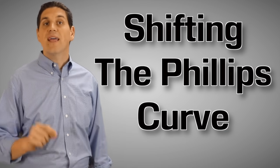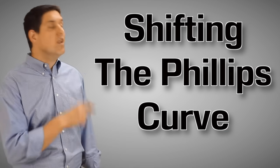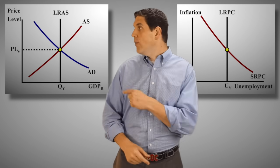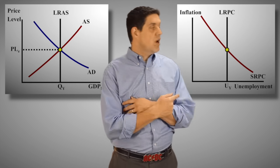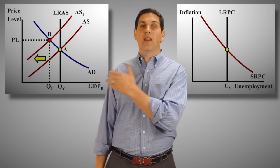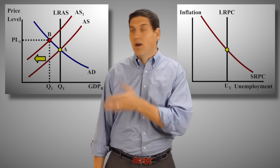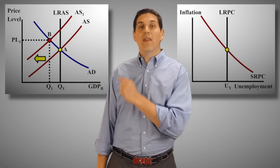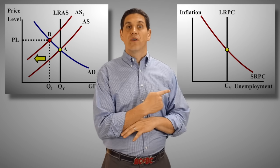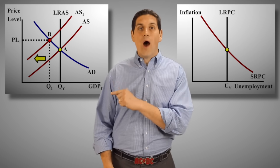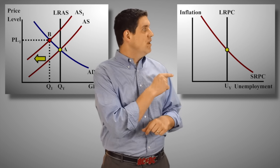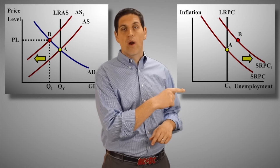Bonus round! Just like aggregate demand and supply, the Phillips Curve can also shift. The best way to show this is by having the graphs next to each other. Over here we have aggregate demand and supply, and over here we have the Phillips Curve, and they're both showing full employment. If aggregate supply shifts to the left and we have stagflation — remember, higher price level and low output — we're going to be at a new point, point B. That point B is somewhere on the Phillips Curve. We have higher price level and low output, which means we have high unemployment. That means the Phillips Curve has shifted to the right. We have more inflation and more unemployment.